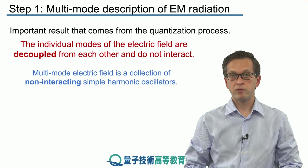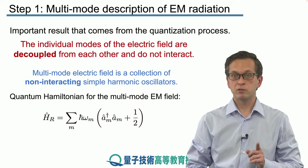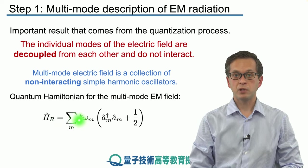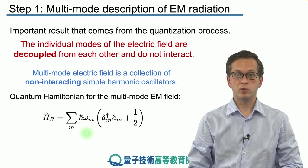In other words, we can immediately write down the Hamiltonian for the total radiation field denoted by HR as the sum over individual Hamiltonians for individual modes m.